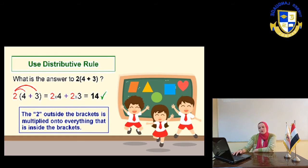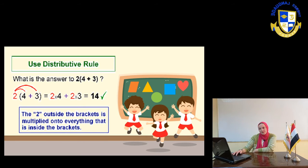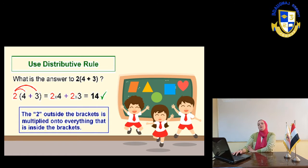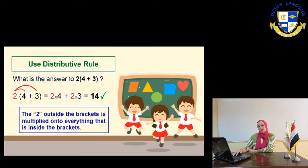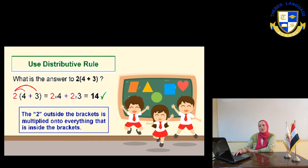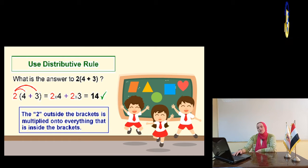Use the distributive rule. What is the answer to 2 bracket 4 plus 3? 2 bracket means that we are going to make 2 times 4 and 2 times 3. So 2 bracket 4 plus 3 means 2 times 4 plus 2 times 3. 2 times 4 equals 8. 2 times 3 equals 6. So we are going to make 8 plus 6. Remember that the 2 outside the bracket is multiplied into everything that is inside the brackets.